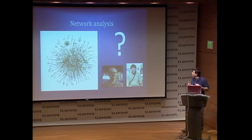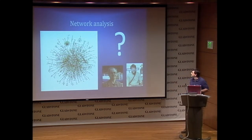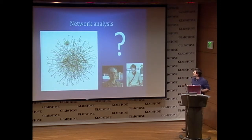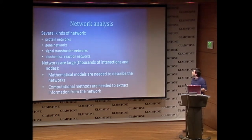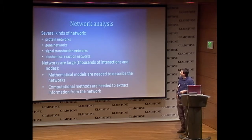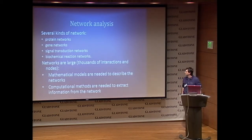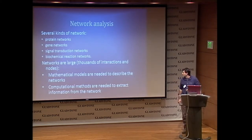He wanted to extract information from these objects, and he was looking for a computer scientist that can produce software to extract information from the networks. You know that there are several kinds of networks: protein, gene, biochemical networks, signal transduction networks, and we need mathematical models and computational methods to extract information.